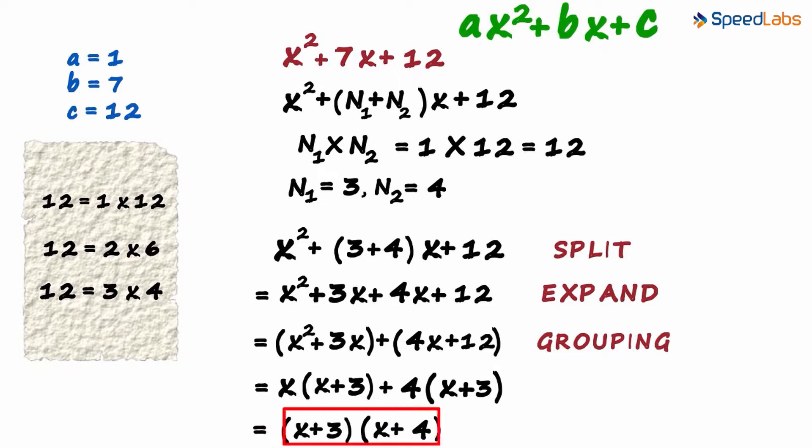I would like to restate. What is important is this part of finding the two numbers. The rest of it is simple. So the procedure remains the same. Split the coefficient of the middle term, expand the brackets, and grouping.